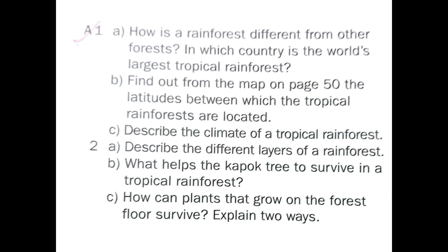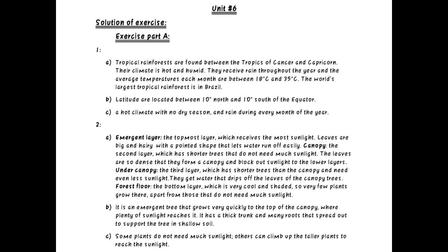Now we will write exercise Part A. How is a rainforest different from other forests? In which country is the world's largest tropical rainforest? Tropical rainforests are found between the Tropics of Cancer and Capricorn. Their climate is hot and humid; they receive rain throughout the year and the average temperature each month is between 18 degrees C and 35 degrees C. The world's largest tropical rainforest is in Brazil.